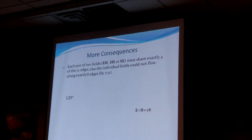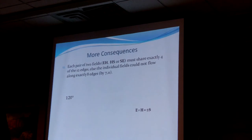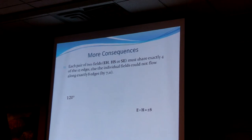Each pair of two fields — E-H, H-S, and S-E — has to have exactly four shared edges. There's a total of 12 edges, and they've got to be in three sets so that the individual fields can each flow along exactly eight.